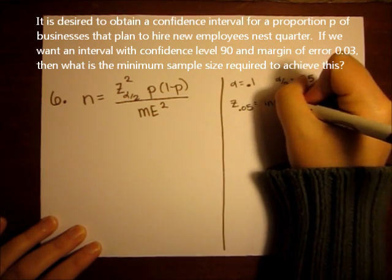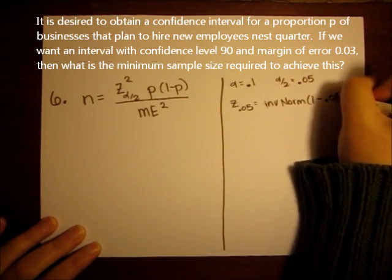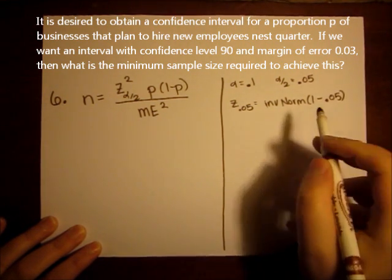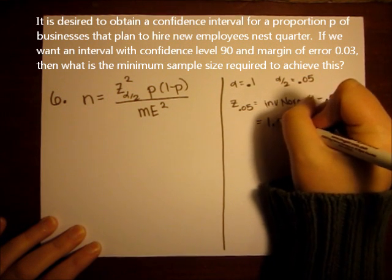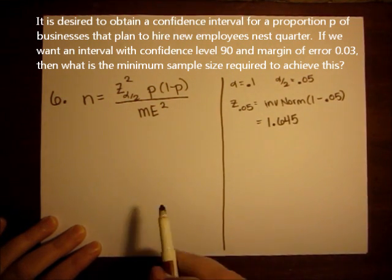is inverse norm of 1 minus the subscript. And inverse norm of 1 minus 0.05 is 1.645.